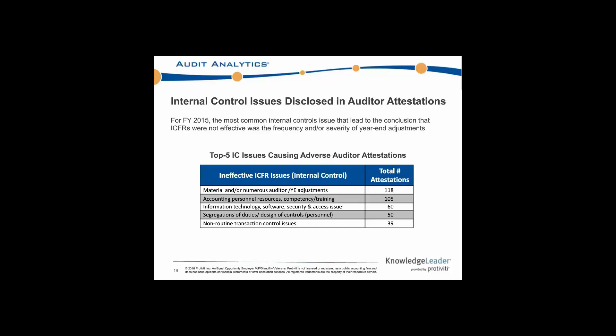Our analysts go through and track not only the companies having these adverse 404 opinions, but also why they're having the issues. It comes down to really two larger bucket items: an internal control issue itself — some sort of shortfall in the systems implemented by the company — and then specific accounting issues that can lead to a failure in internal controls. This table indicates what the top five reasons were in fiscal year 2015 for why a company had an internal control issue.